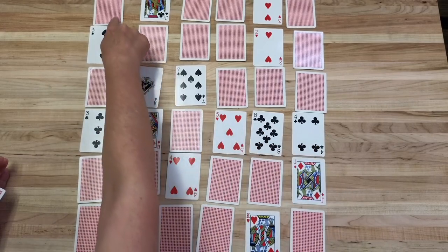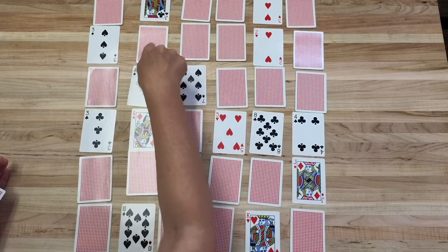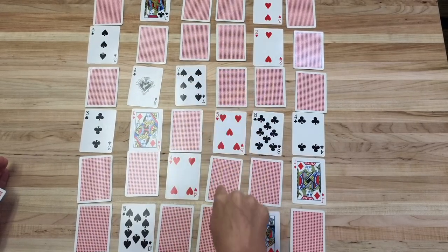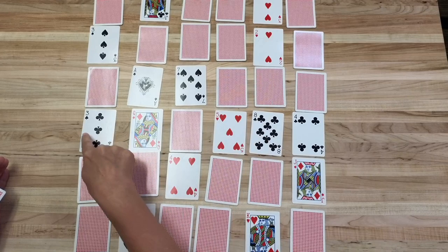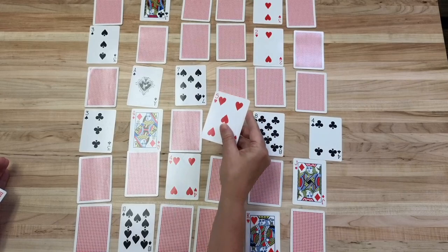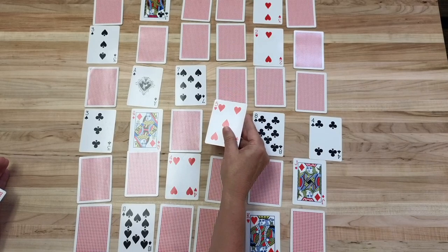And you're going to do the same with columns. One, two, three, four—that's okay. One, two—that's okay. One, two, three, four—that's okay. One, two, three, four, five. Ah! So we know it's in this row, we know it's in this column, so we know that it's this card that got turned over. So that is the trick.